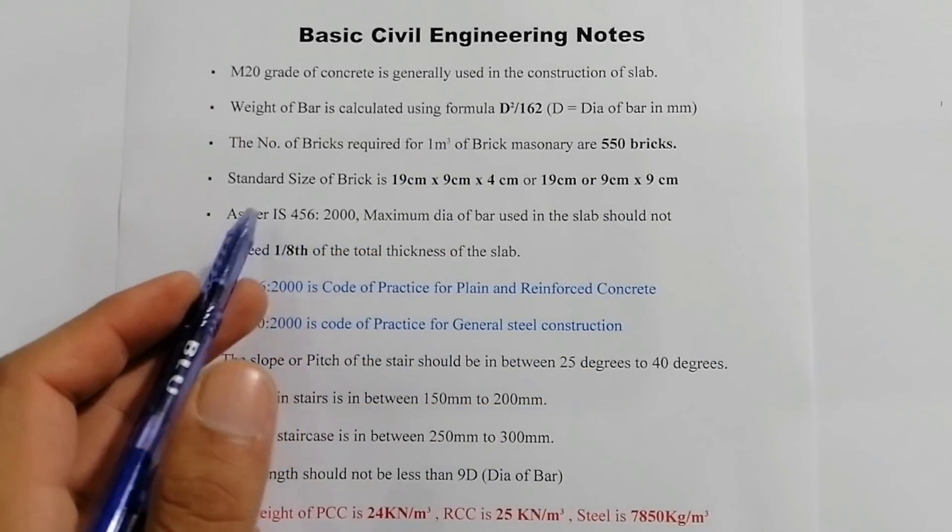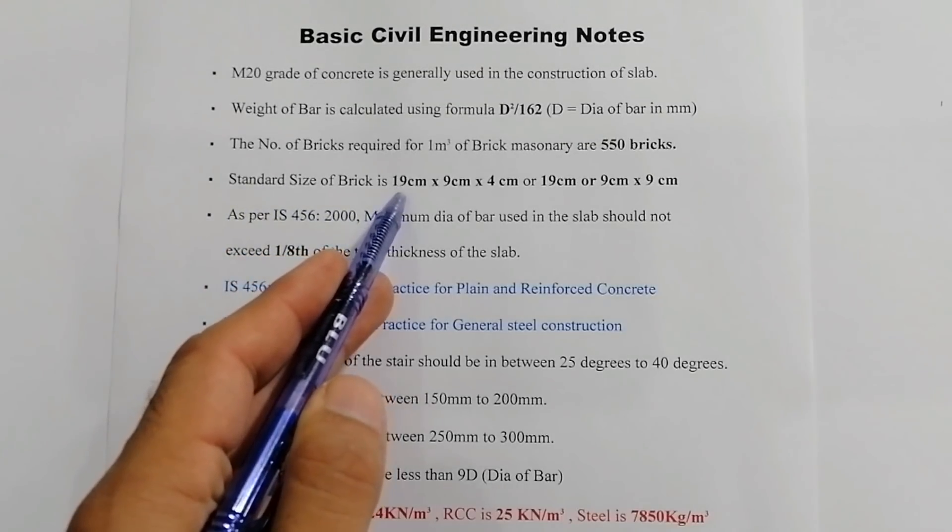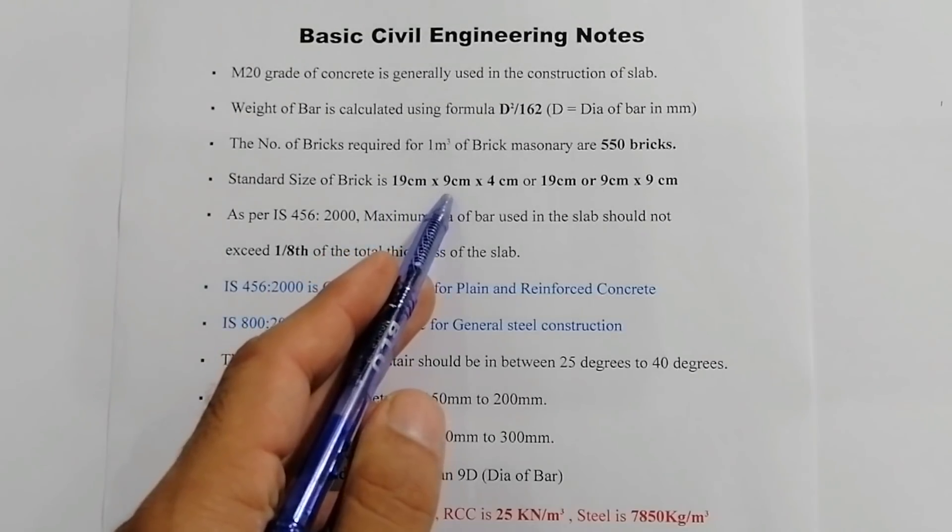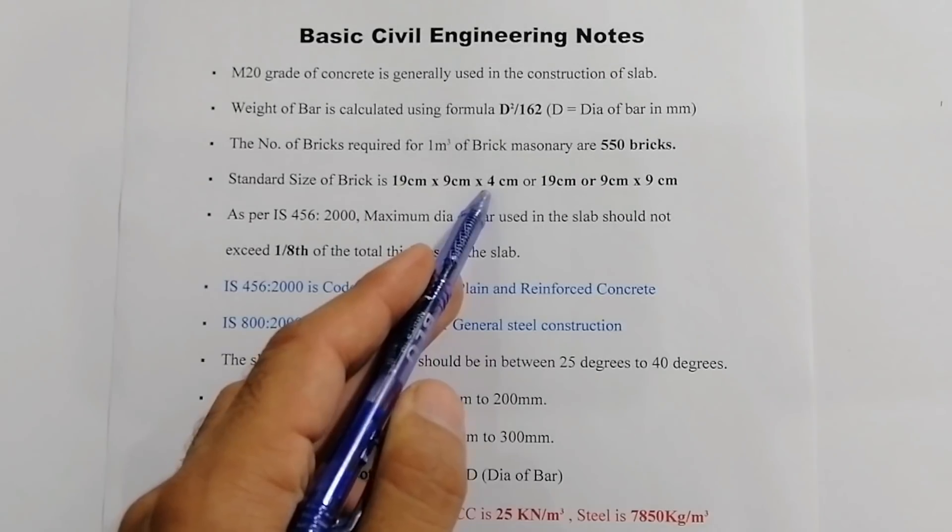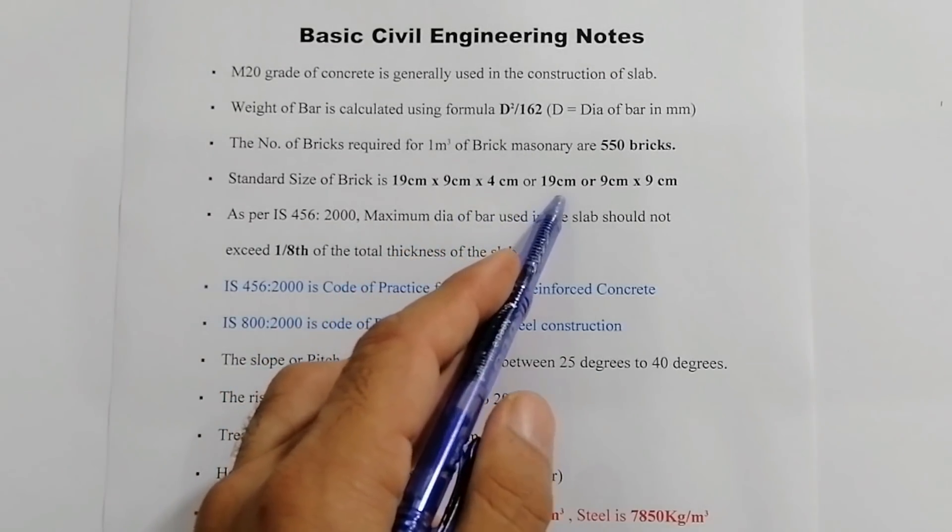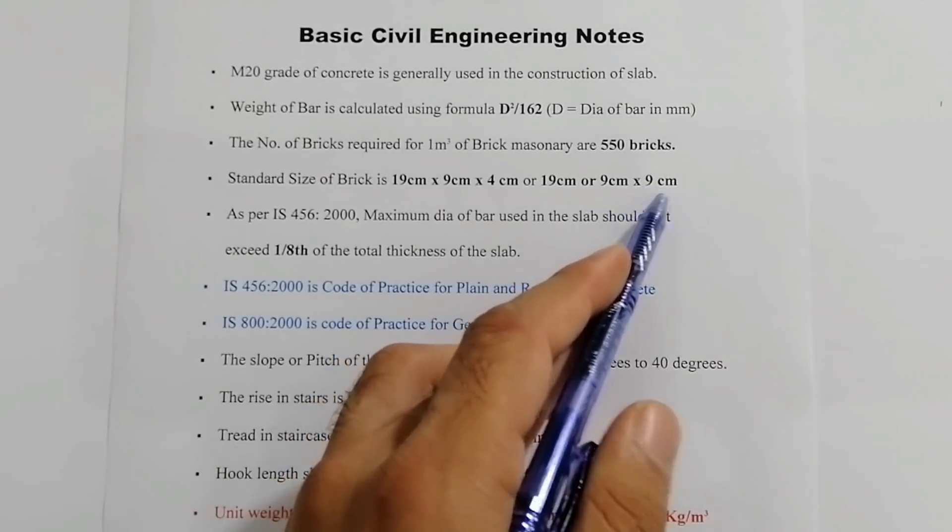The fourth one: standard size of brick is 19 cm length, 9 cm width, and the thickness or depth is 4 cm. Or 19 cm by 9 cm by 9 cm.